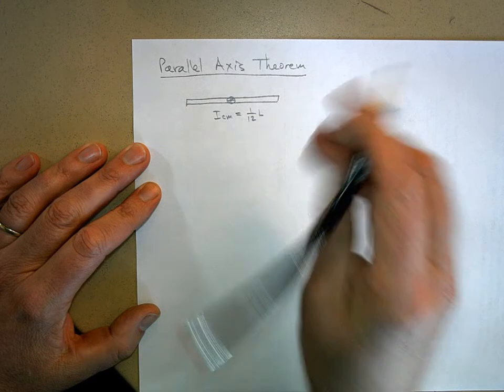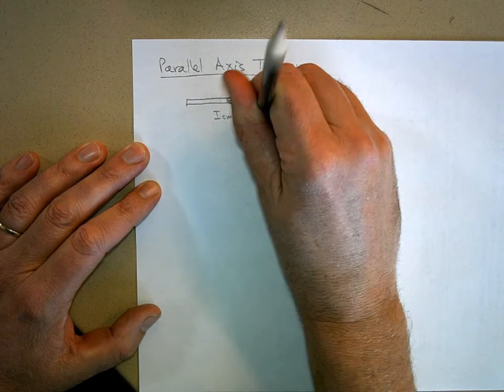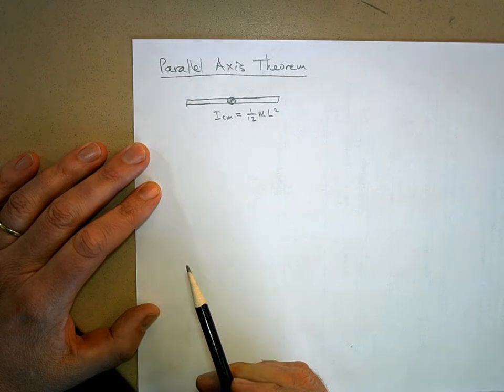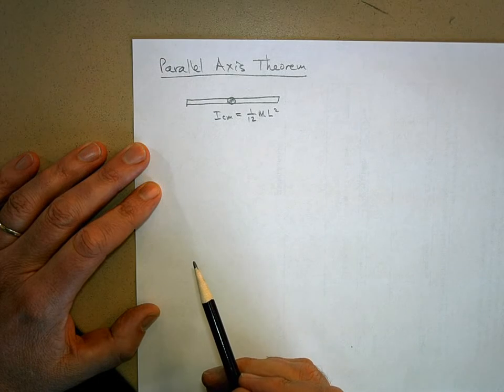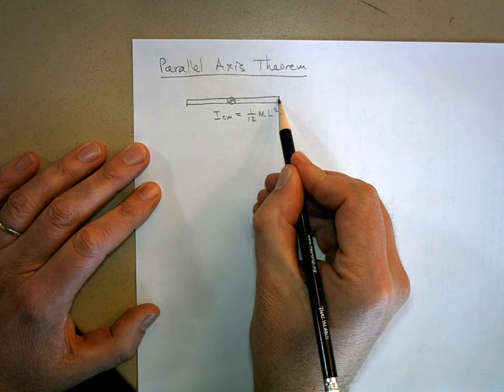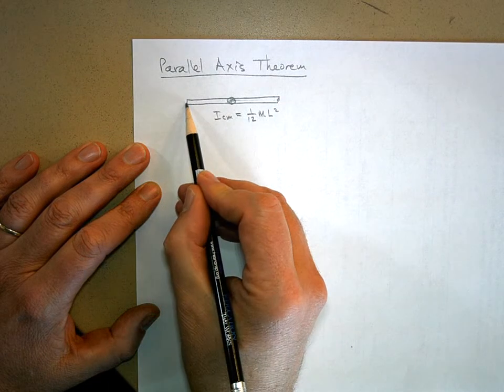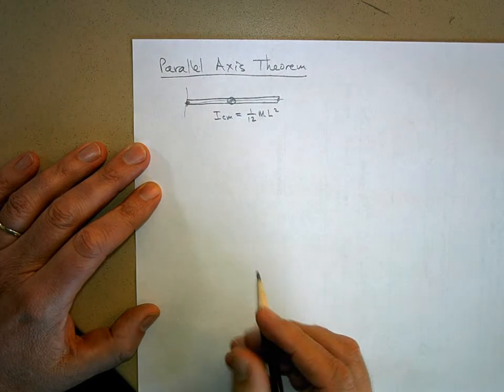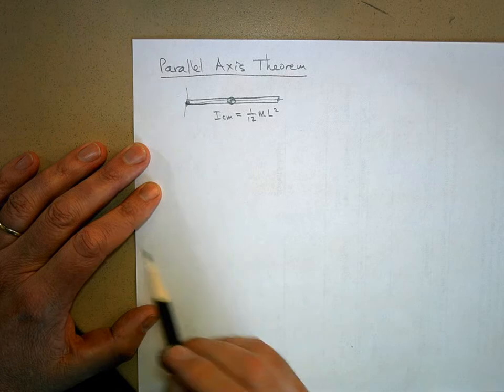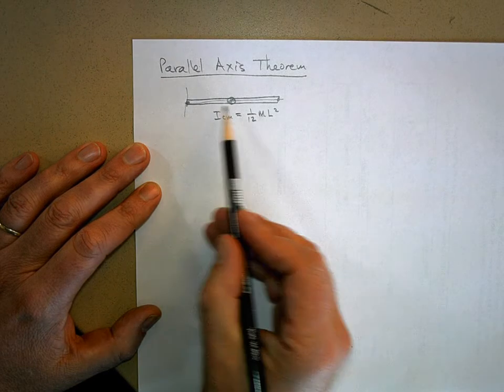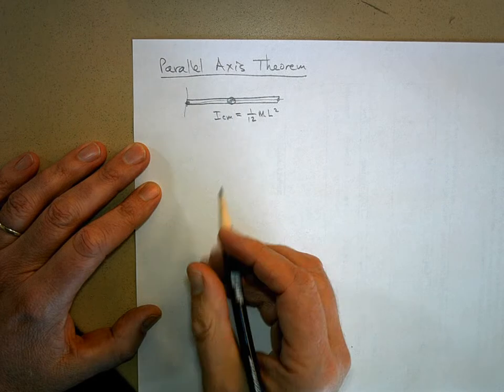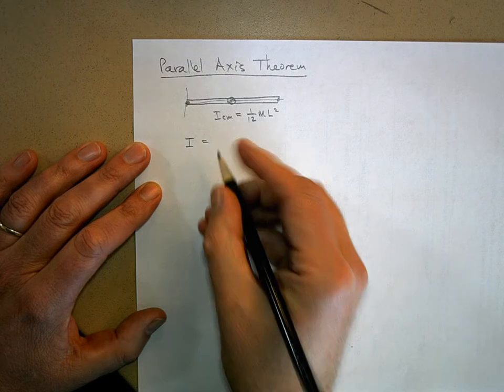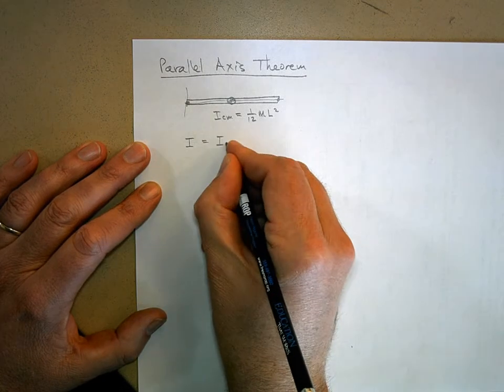It's 1/12 ML squared, but what if I offset my axis of rotation from there? For example, what if I held the stick all the way at the end? We have this thing called the parallel axis theorem that lets us handle that. What is the rotational inertia about the end of the stick instead of about its center? Well, here it is: I is equal to the rotational inertia of the center of mass.